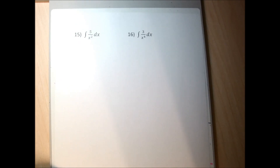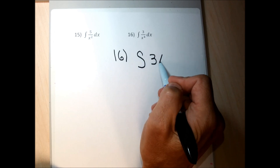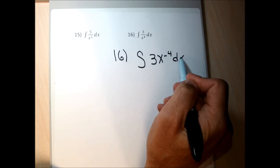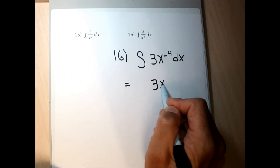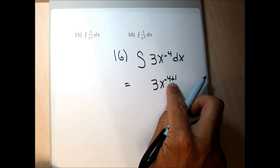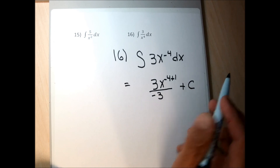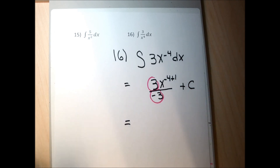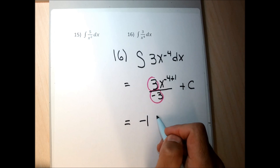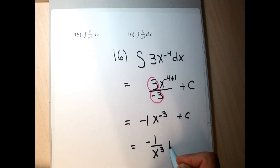For problem 16, to find the antiderivative I rewrite it so x is not buried in the denominator. I move x up to the numerator and make its exponent positive. Now I drop the integral sign, add 1 to the exponent: negative 4 plus 1 is negative 3. I divide by the new exponent negative 3, and tack on plus C. The 3s cancel and 3 divided by negative 3 is negative 1, so I get negative 1 times x to the negative 3.